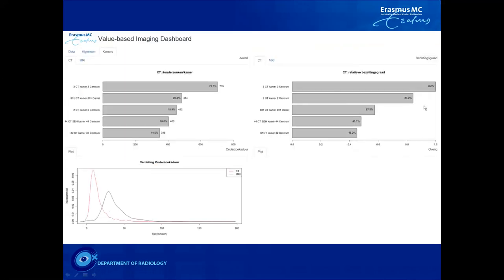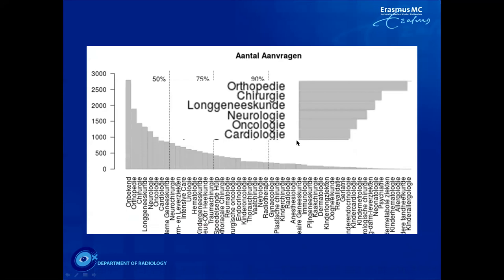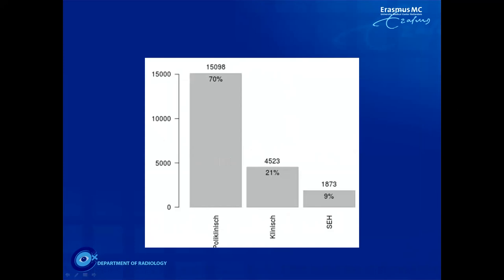The dashboard also shows equipment usage — how many examinations are performed on each room — and which clients are sending us cases: orthopedics, surgeons, pulmonary physicians, neurologists, oncologists. It also shows where examinations come from: approximately 70% outpatients, 21% inpatients, and 9% from the emergency department.